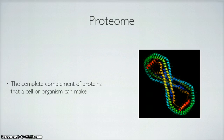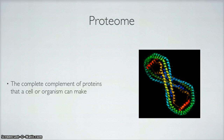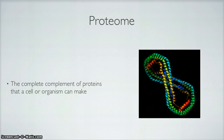Proteome. It is a complete complement of proteins that a cell or organism can make — basically, all of the proteins that a cell can make. In a cell, you have the DNA and you have proteins, and our genes code for more proteins than the total number of genes. So gene A can make two proteins, and gene B can make three proteins.